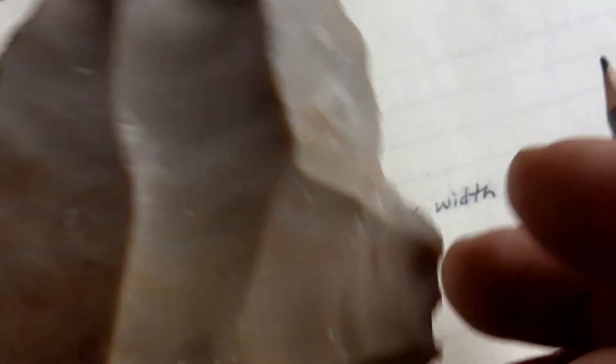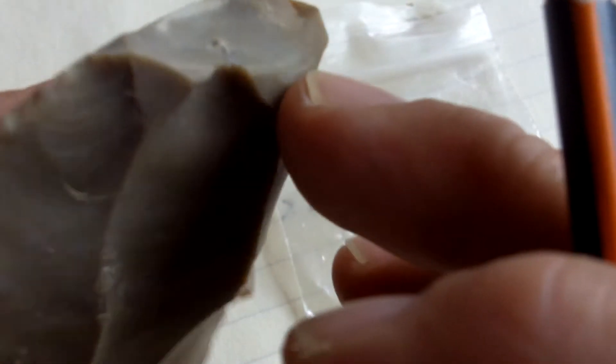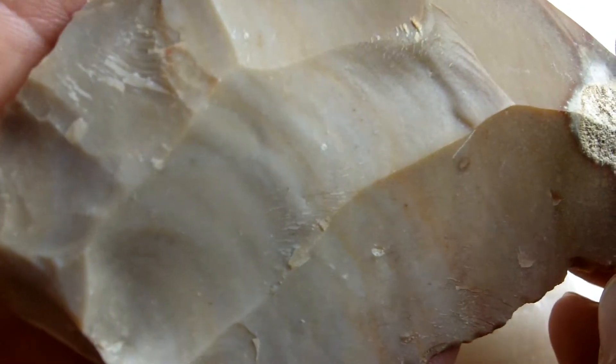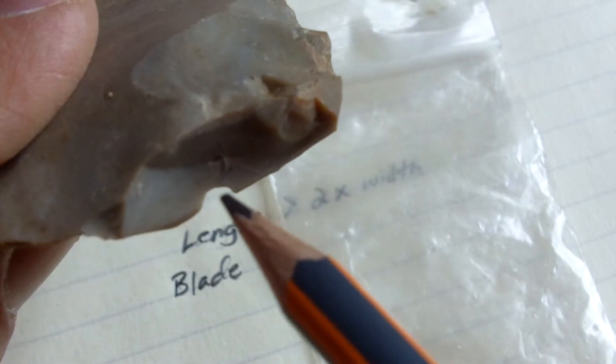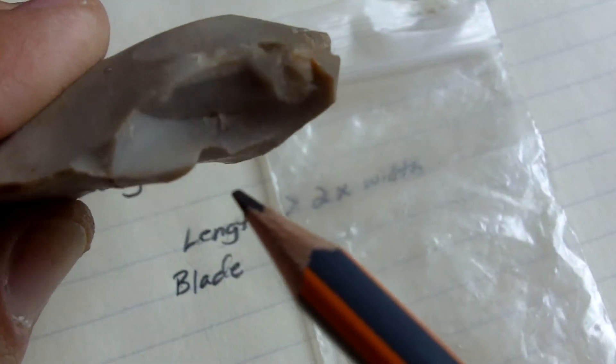And this will kind of give you a better illustration. This is totally unmodified. I think I may have brushed the edge a little bit on this. But this one here is totally unmodified. This one here is just a flake that I was thinning down a little bit. And it has a punch mark here.